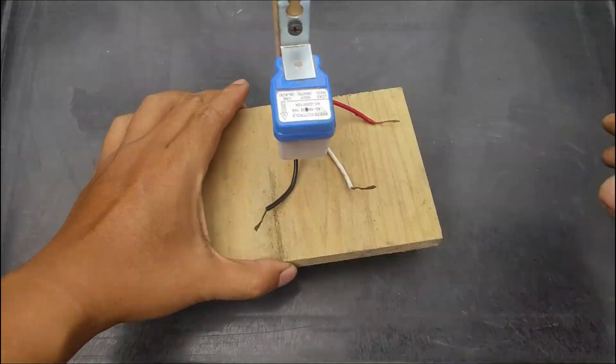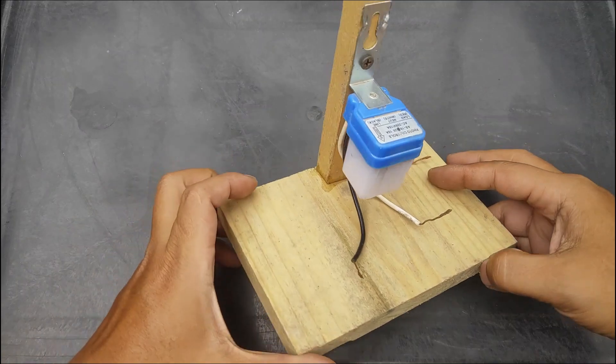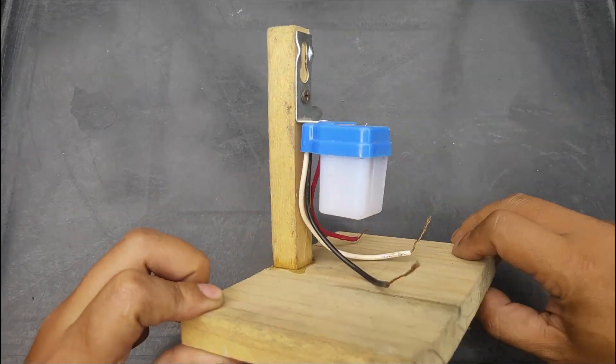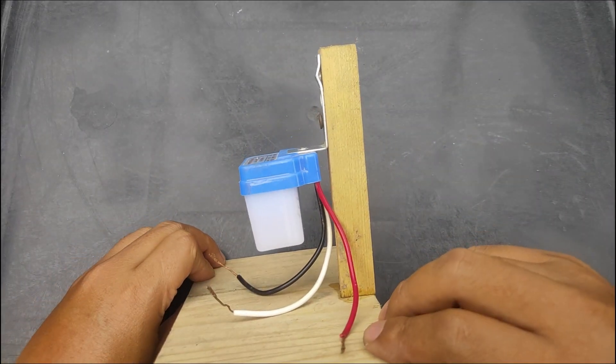For this demonstration, I've already attached the sensor to a wooden board to make the setup easier to see. You can mount your sensor on a wall or pole where it gets direct sunlight during the day.